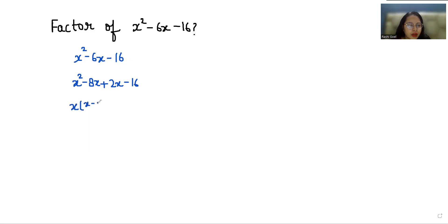Now I can take x as common, so x(x - 8), and here if I take 2 as common, so (x - 8). Now I can take x - 8 as common, so (x + 2) = 0.